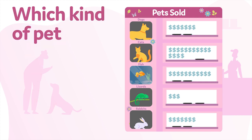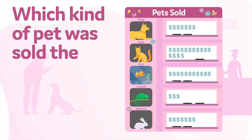Which kind of pet was sold the least? The shortest row is the lizards — there are only one, two, three dollar signs in that row. Of all the animals, lizards were sold the least.